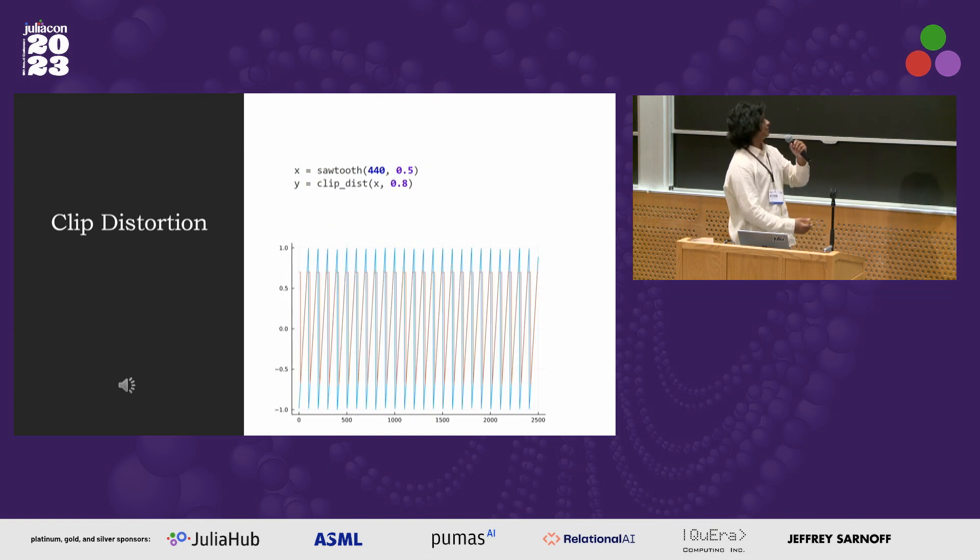Clip distortion works similarly, but instead of scaling things down, it'll clip any values above it to a certain, to the threshold that it's checking for. So you can see there that the peaks are truncated to 0.8.